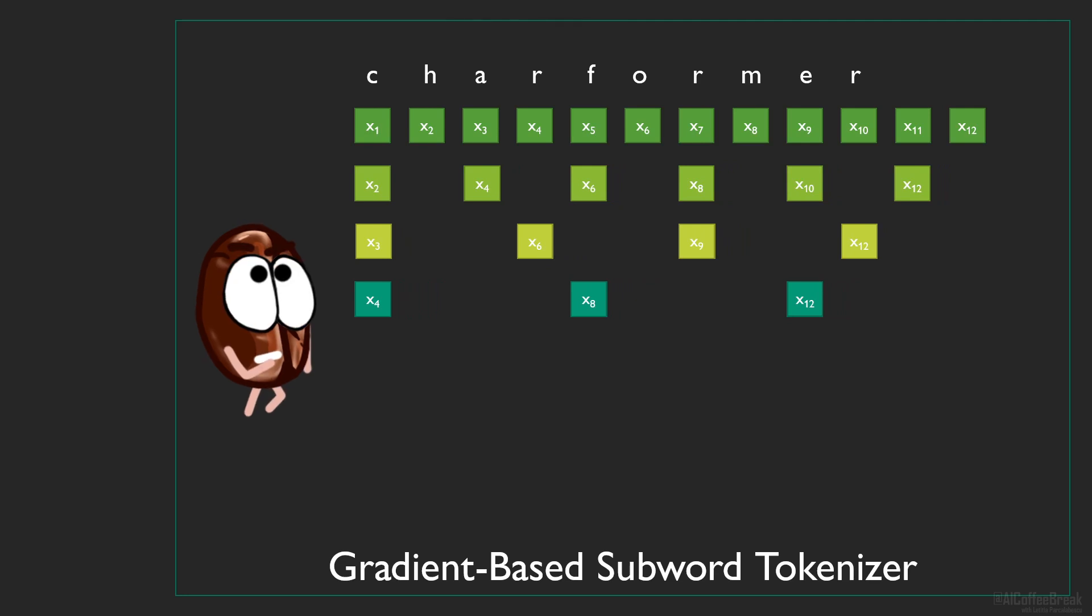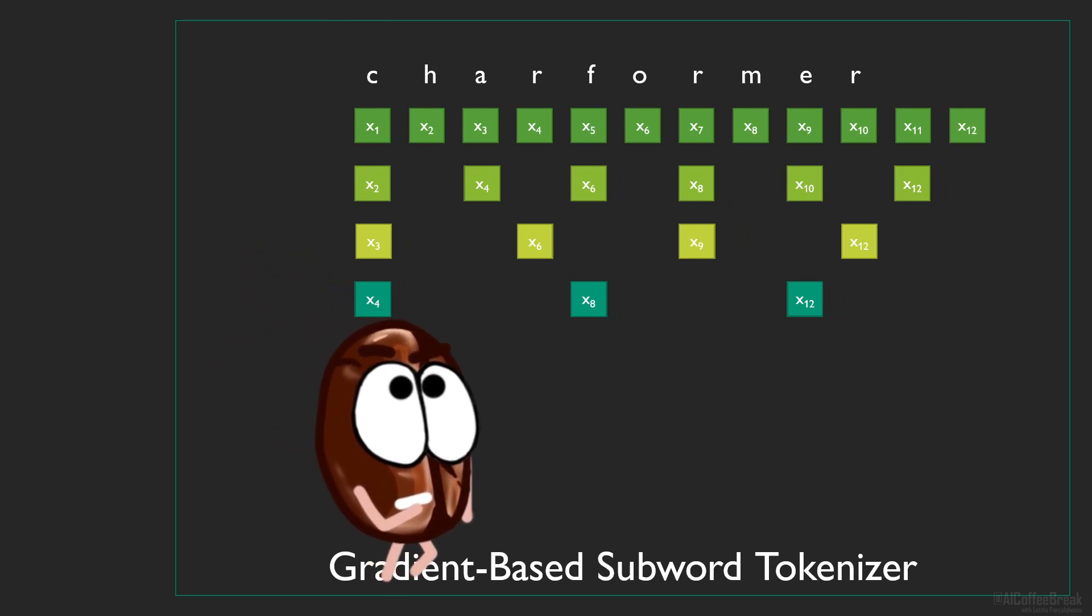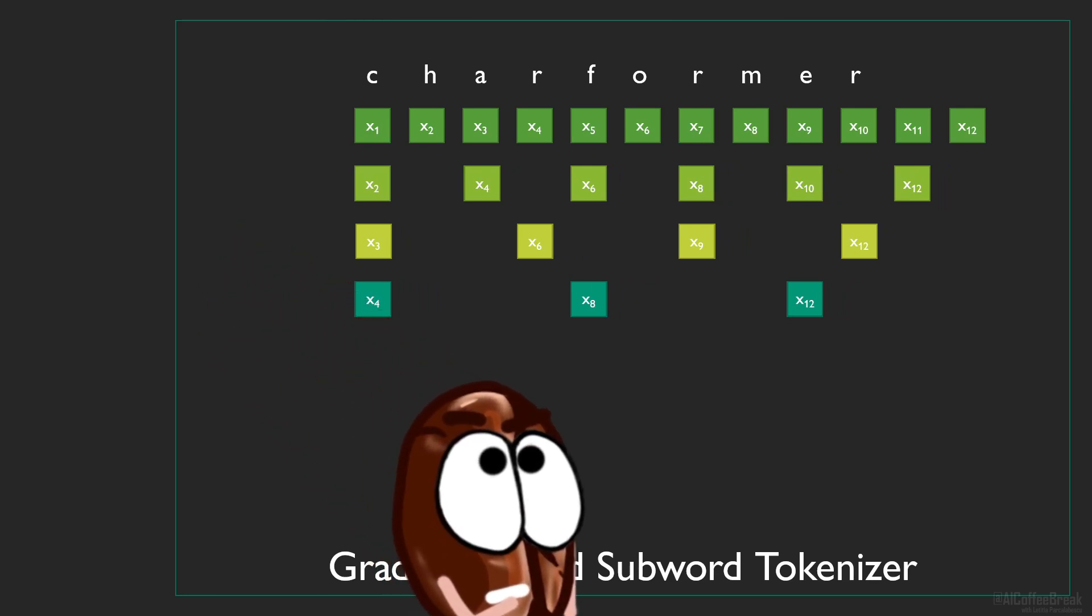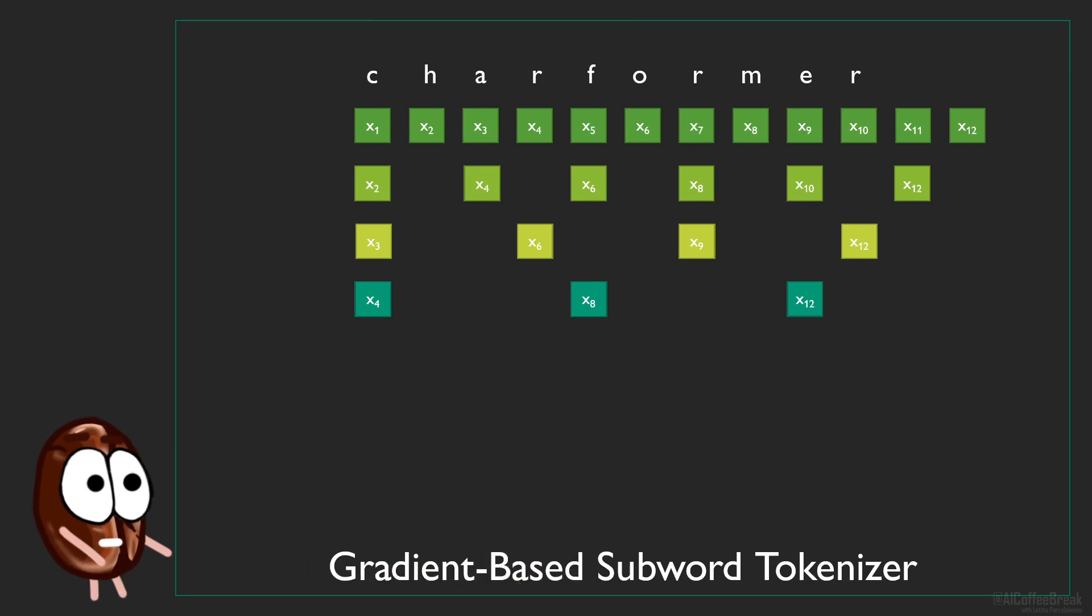Ms. Coffee Bean, didn't we say that we want to reduce the sequence length? Now we have 4 sequences instead of 1, and by mean pooling we lost the order of the individual characters for block sizes bigger than 1. What are we even doing? Ah, the recipe goes further.